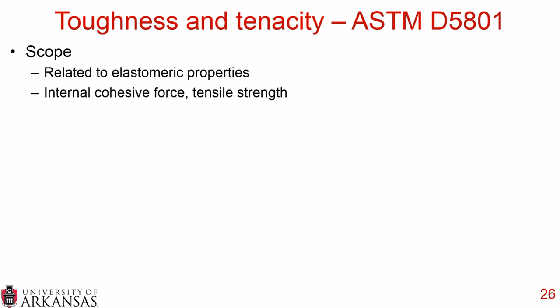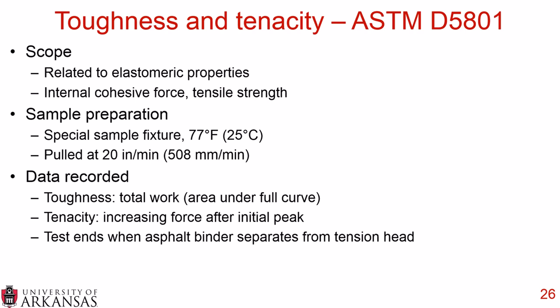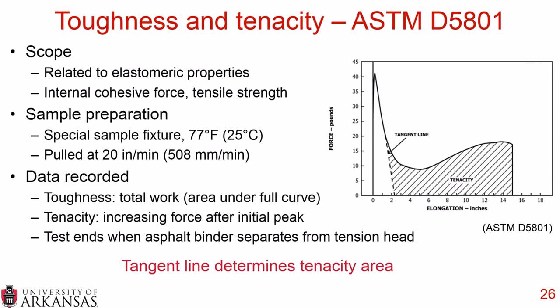Toughness and tenacity (ASTM D5801) characterizes elastomeric properties — internal cohesive force and potential tensile strength — of asphalt binder. A special fixture is used, the test runs at 77°F with a pull rate of 20 inches per minute. Toughness is the total area under the full load-displacement curve; tenacity is the area to the right of the tangent line on the softening curve portion. The test ends when the asphalt binder separates from the tension head. Special equipment is required.